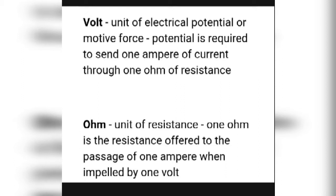Hello brothers, today our topic is basic formulas and definitions of electrical units. We start with the first unit: volt. Volt is the unit of electrical potential or electromotive force. The potential required to send one ampere of current through one ohm of resistance is called a volt.